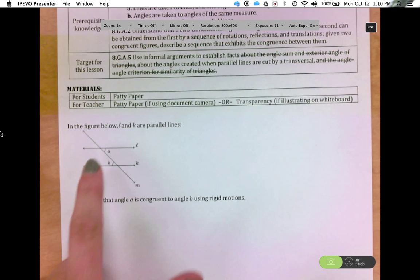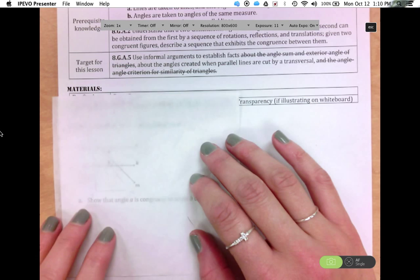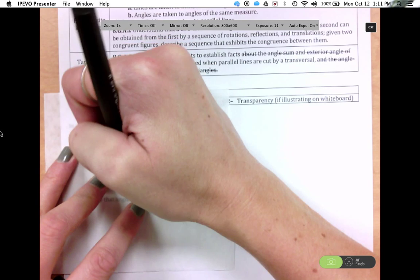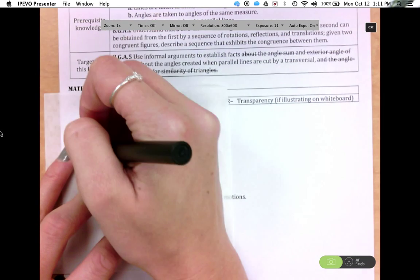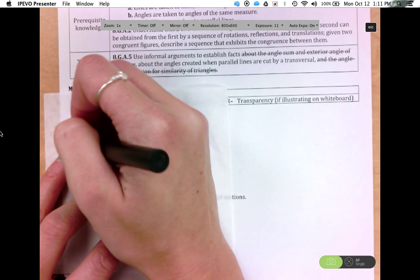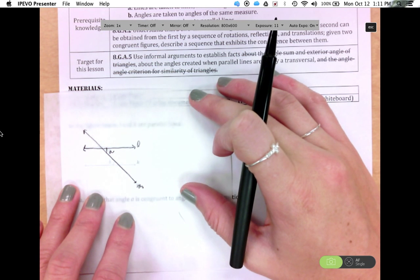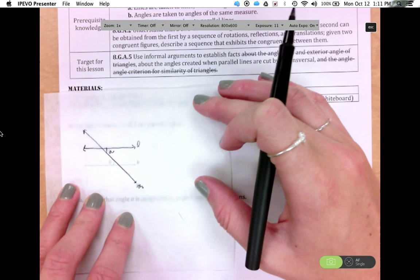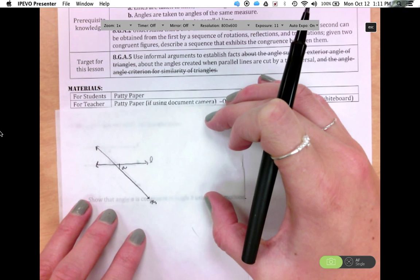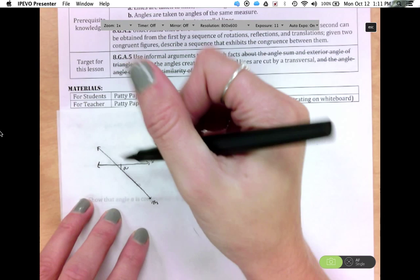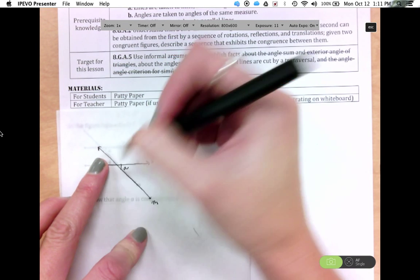So first we'll copy this top area, and you'll want to brainstorm with your students first, what do you think? How could we map A to B? What are some of the different transformations we'll need? And so the first method would be to copy your line M and L and your A. And so what we're going to do is we're going to translate L along M. And since L is parallel to K, this translation moves L onto K.